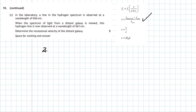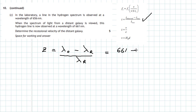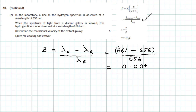Using the first equation, z = (λ_observed − λ_rest) ÷ λ_rest. The observed wavelength is 661 nm and the rest wavelength is 656 nm. So z = (661 − 656) ÷ 656, which gives z = 0.00762. There are no units for the z-ratio because the nanometer units cancel out.